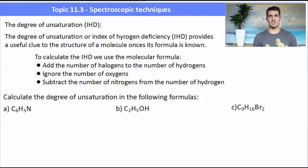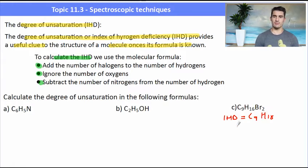The degree of unsaturation, the IHD. We need to be able to calculate the IHD. It gives us a useful clue to the structure of the molecule once its formula is known. Does it have double bonds? Does it have rings? To calculate the IHD we use the molecular formula. We add the number of halogens to the number of hydrogens, we ignore the number of oxygens, and we subtract the number of nitrogens from the number of hydrogens. To work out our IHD, we'll start with the one on the right. We would pretend to add the two bromines to the hydrogens, giving us C9H18. Now that appears to be a saturated hydrocarbon, so it would have an IHD of zero.